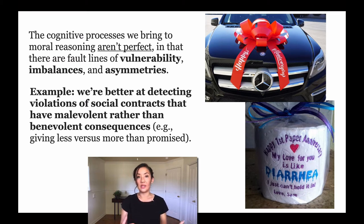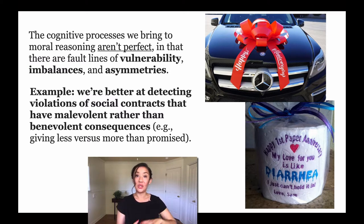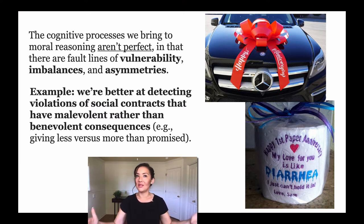Another example is that we're better at deciding violations of social contracts that have malevolent rather than benevolent consequences. Think of a social contract where you're either giving too little — such as giving someone toilet paper for an anniversary — or giving too much, like giving someone a car for an anniversary. We're really attuned to identifying when you're giving too little rather than too much, even though it's the same distance from the right social action.